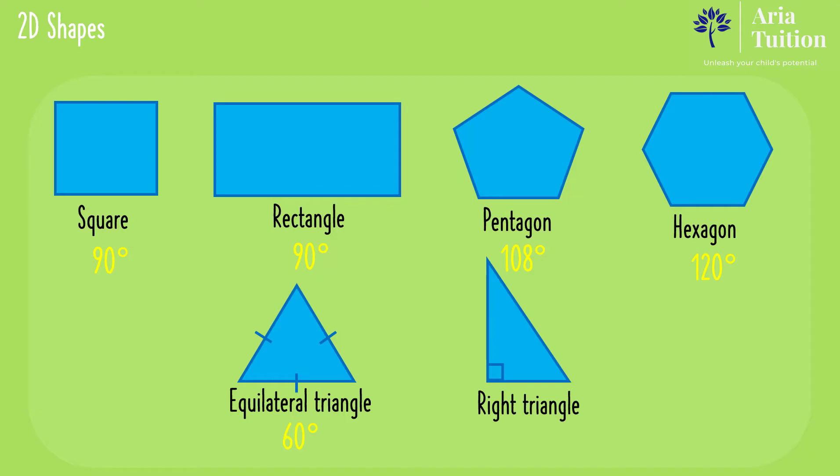And this is a right triangle which has a right angle. Note that angles in all quadrilaterals or 4 sided shapes equals 360 degrees.